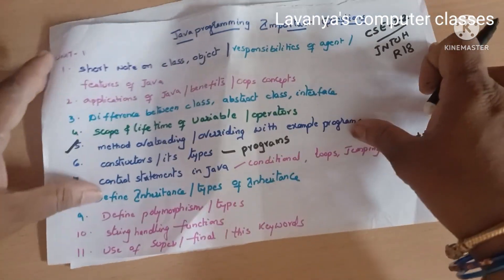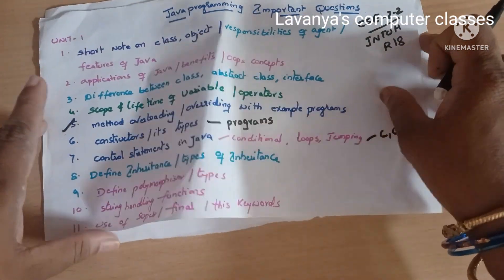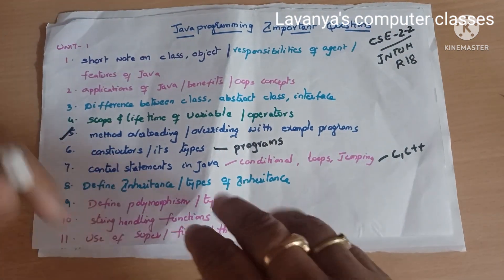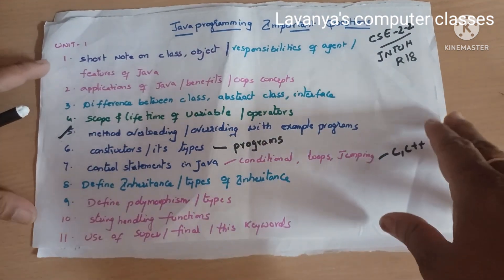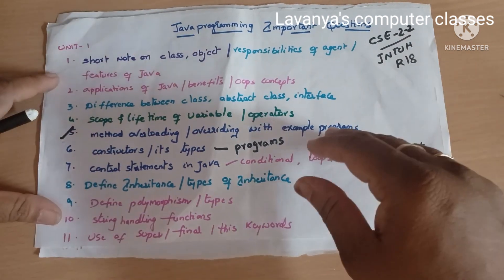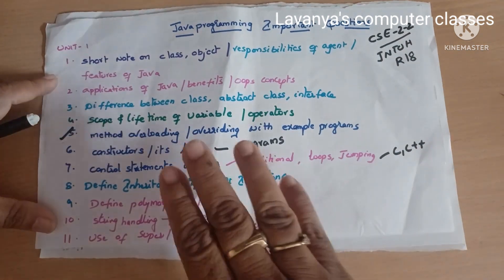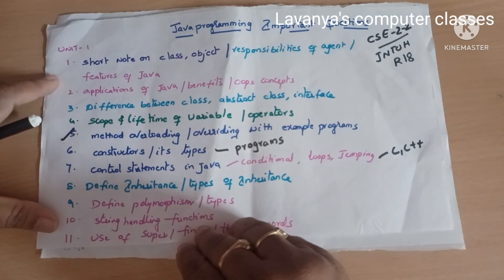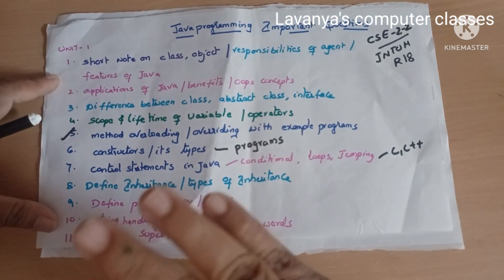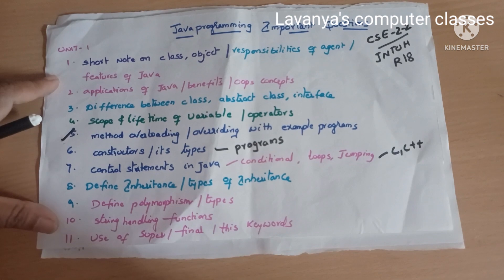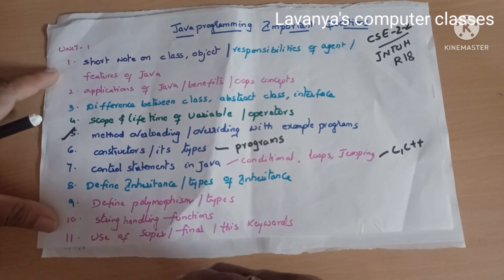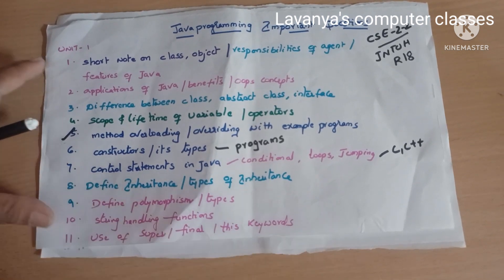These are the important questions in Java programming. If we start reading now, we can easily pass Java. I will explain which unit is most important for the exam pattern in later sessions. Start reading at least two questions from this list per unit and learn everything with programs. Thank you for watching — if you like this video, please subscribe to my channel and share it with your friends.